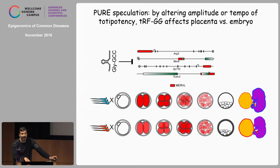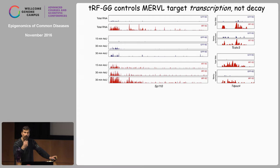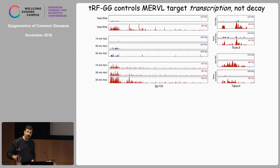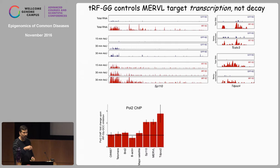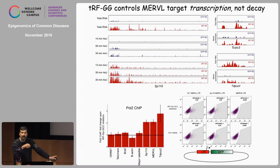Coming back to how TERF-GLY regulates MERVL: we asked whether target genes are regulated transcriptionally or post-transcriptionally using metabolic labeling — effectively nuclear run-ons. When you knock down TERF-GLY, you see upregulation of target genes in total RNA, and that upregulation is completely captured by newly synthesized RNA. So we're actually regulating MERVL-driven transcription rather than post-transcriptional RNA stability — very unlikely to be an Argonaute-mediated mechanism. We also see an increase in RNA Pol II at our favorite target genes. We can pull the LTR out of the genome and run GFP with it — it doesn't need to be at a particular chromosomal position. TERF-GLY is regulating MERVL-driven transcription.